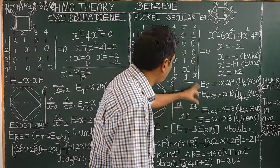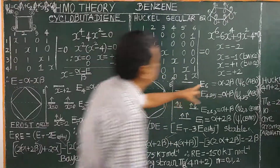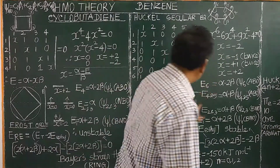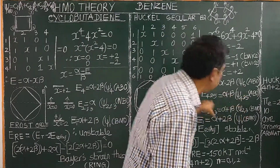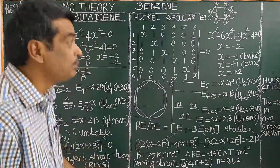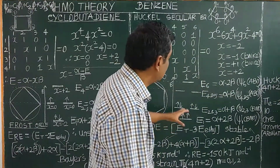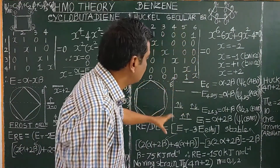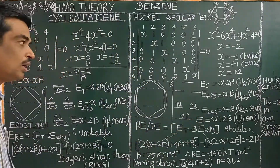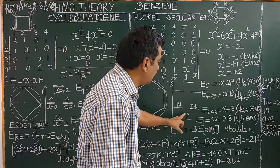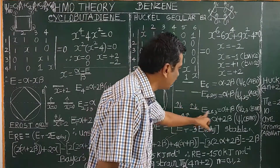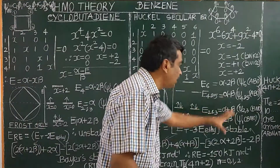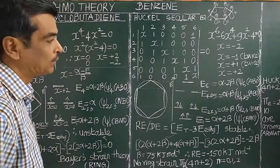The energy levels are obtained by substituting x = −2, giving E1 = α + 2β, and x = −1, giving E2 and E3 as a degenerate pair. Levels 4 and 5 are also degenerate, and level 6 is the highest antibonding orbital. There are six pi electrons. They are filled following the Pauli exclusion principle: two electrons go into the lowest orbital E1, and four electrons fill the degenerate levels E2 and E3. All electrons are in bonding molecular orbitals, making benzene a very stable molecule.